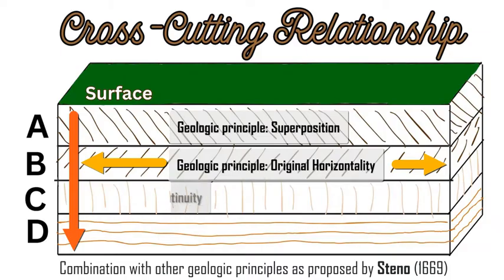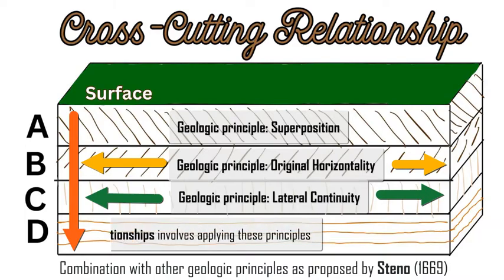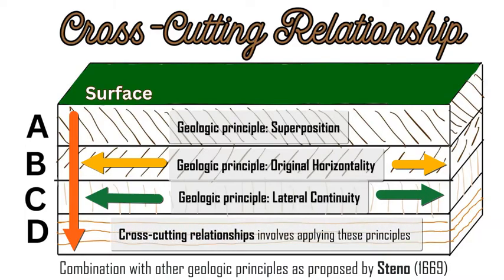Then we have the law of lateral continuity, which means that these rocks are the same across a lateral area of geography or location. So these geologic principles apply before we get to the principle of cross-cutting relationships.